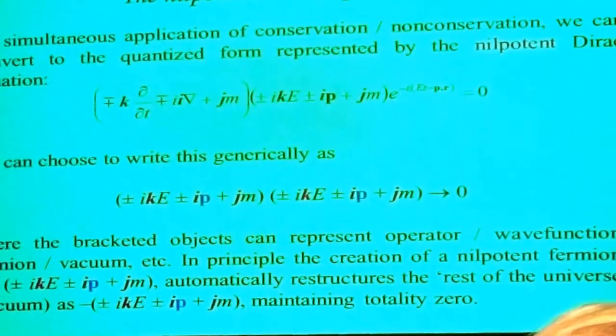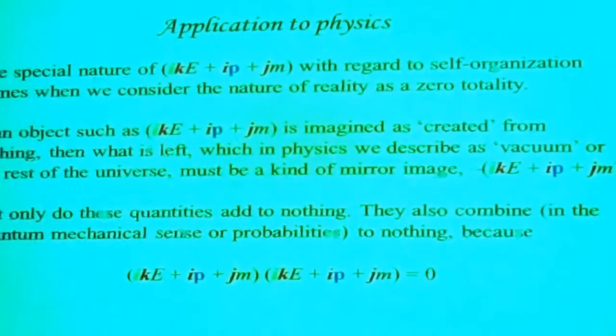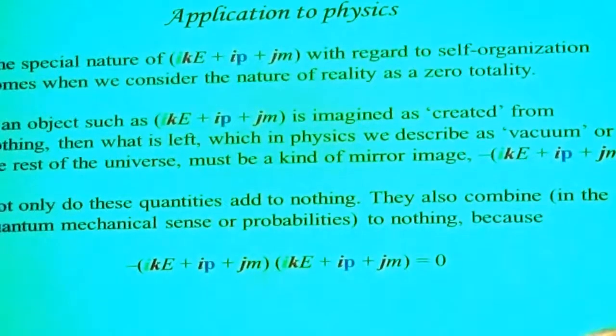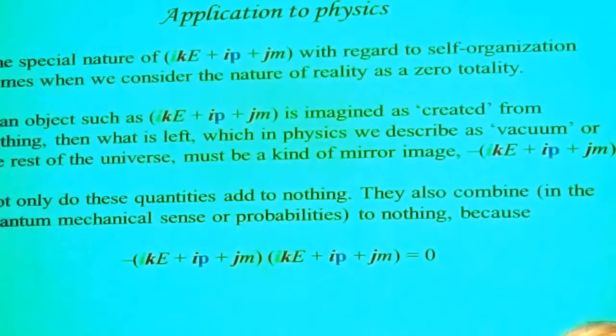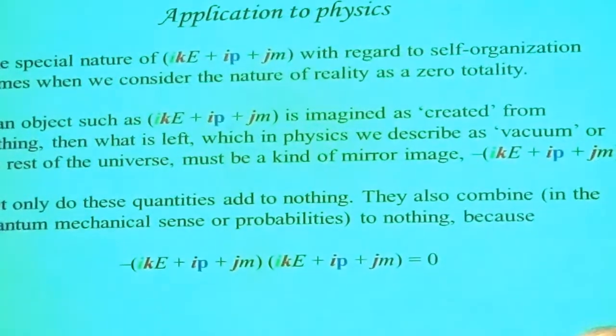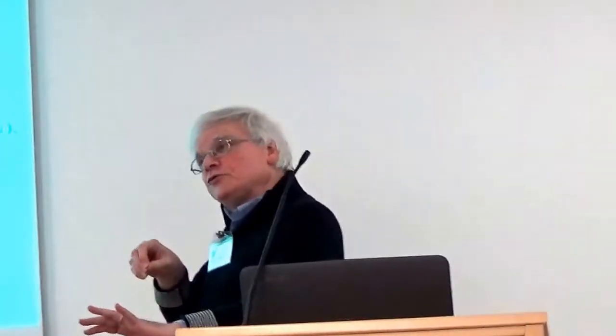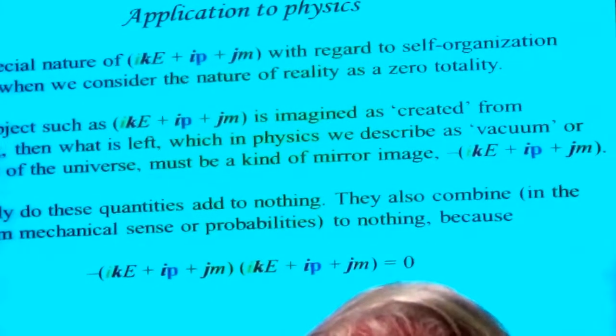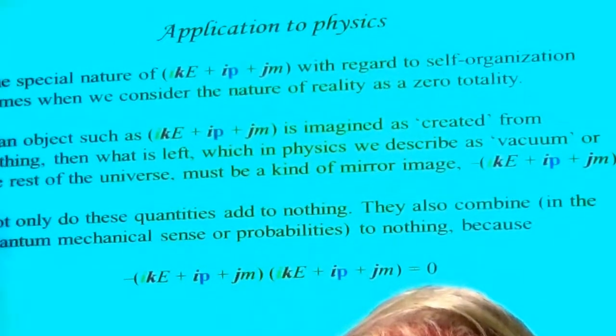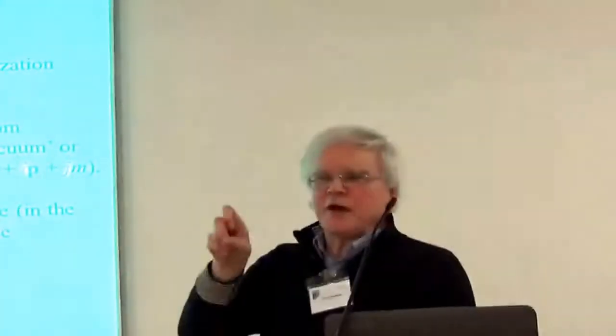It also helps you to understand what quantum mechanics and the Pauli exclusion principle are all about. The special nature of this term comes if we treat reality as a zero totality. If we imagine creating the object out of absolutely nothing, you're left with a hole in nothing. You pluck the fermion particle out of nothing and you're left with a universe which is the hole in nothing left by that particle. Vacuum isn't nothing — it's a hole in nothing. It's the whole universe we need so that that particle can exist in its state.